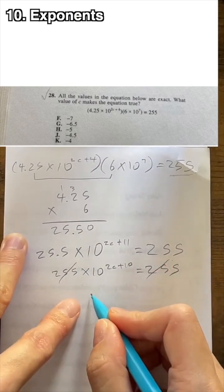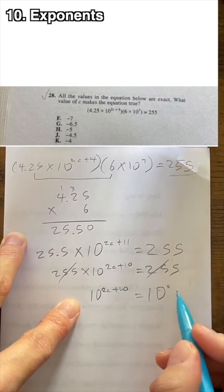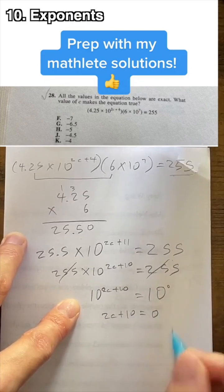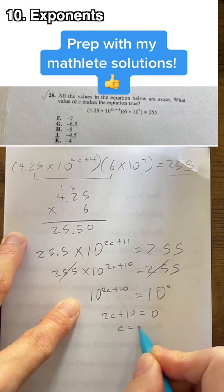Cancel these, and you get 10 to 2c plus 10 equals 10 to the 0 power, because that's what 1 is. 2c plus 10 equals 10, and without writing the extra step, you want to just directly know that c is negative 5.